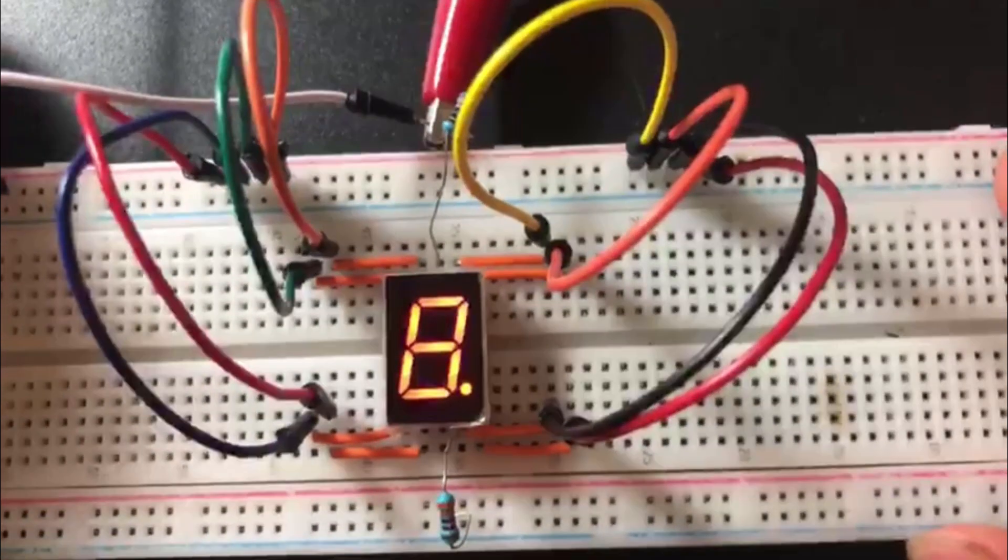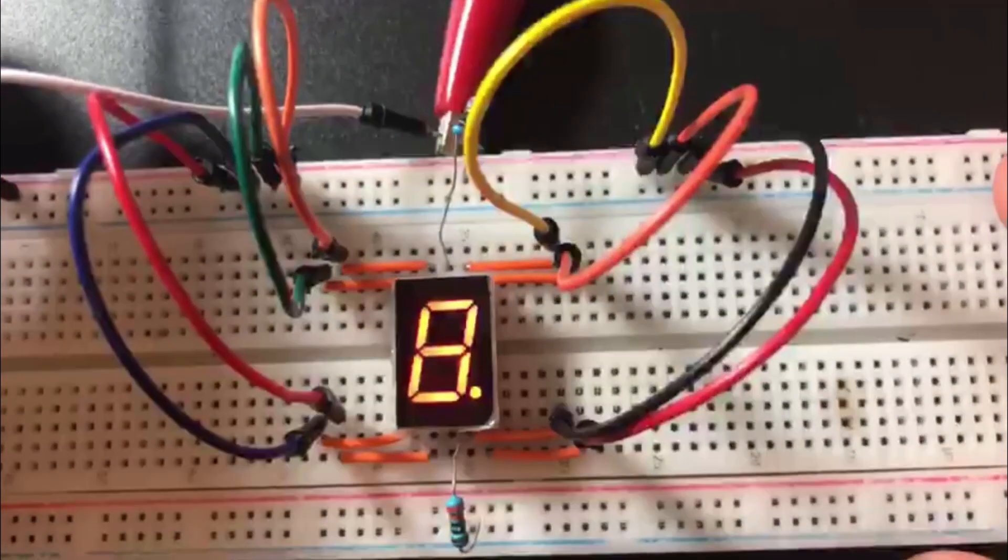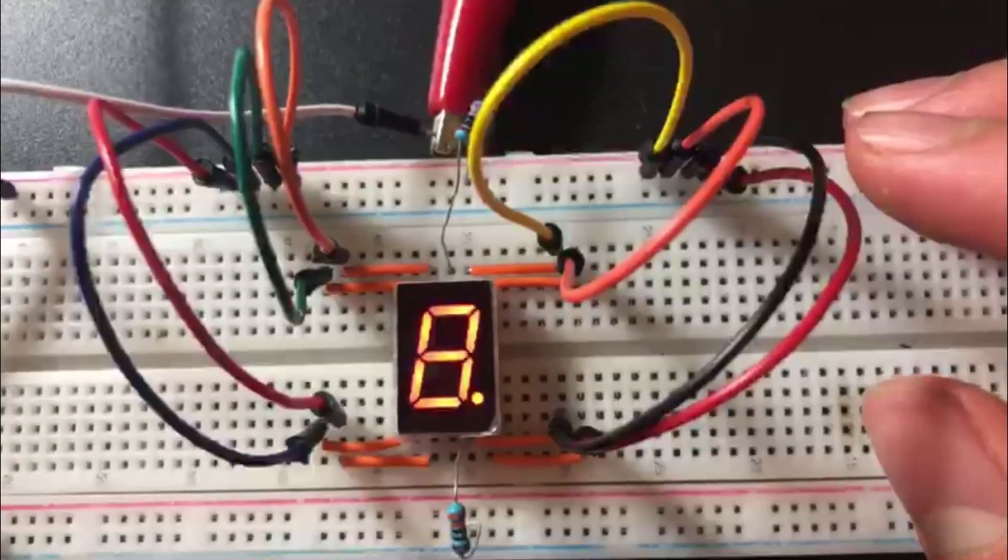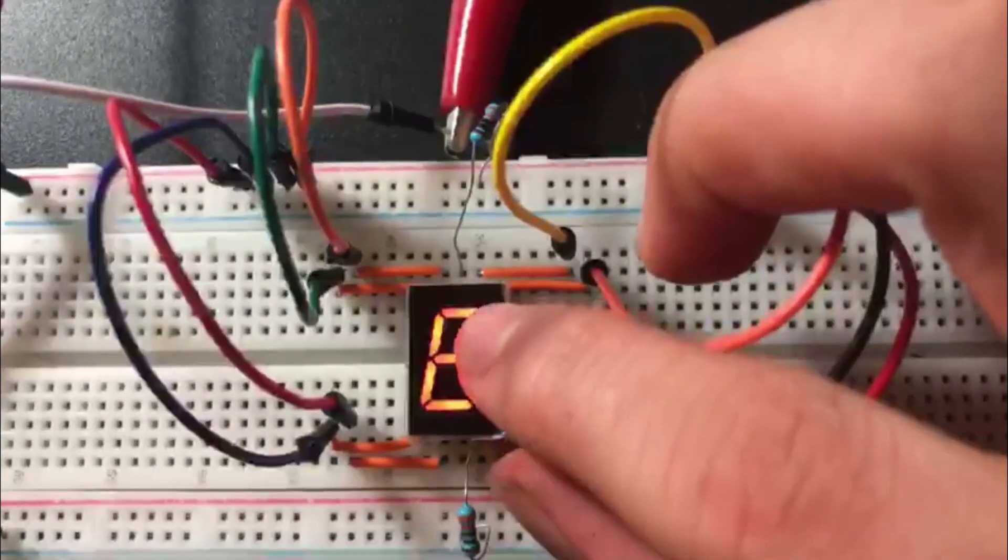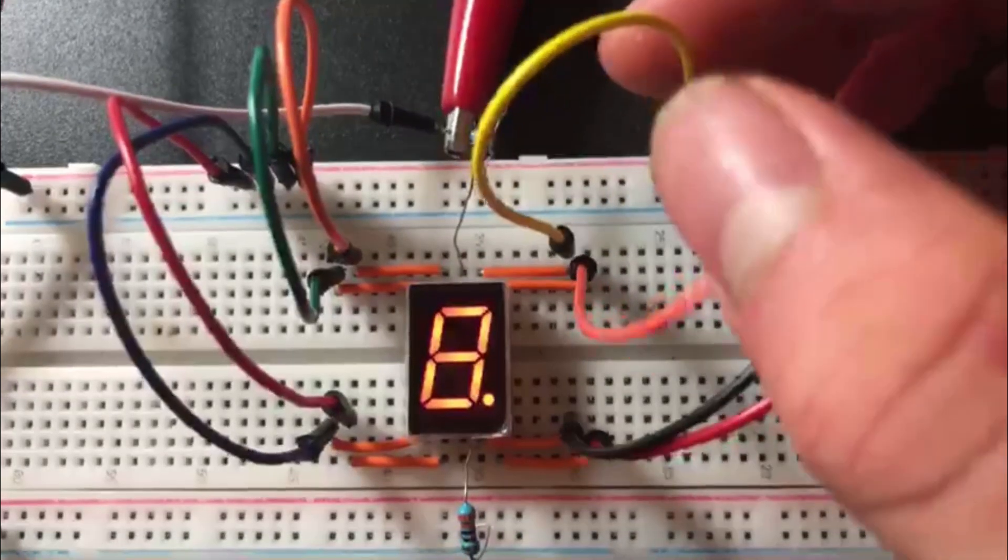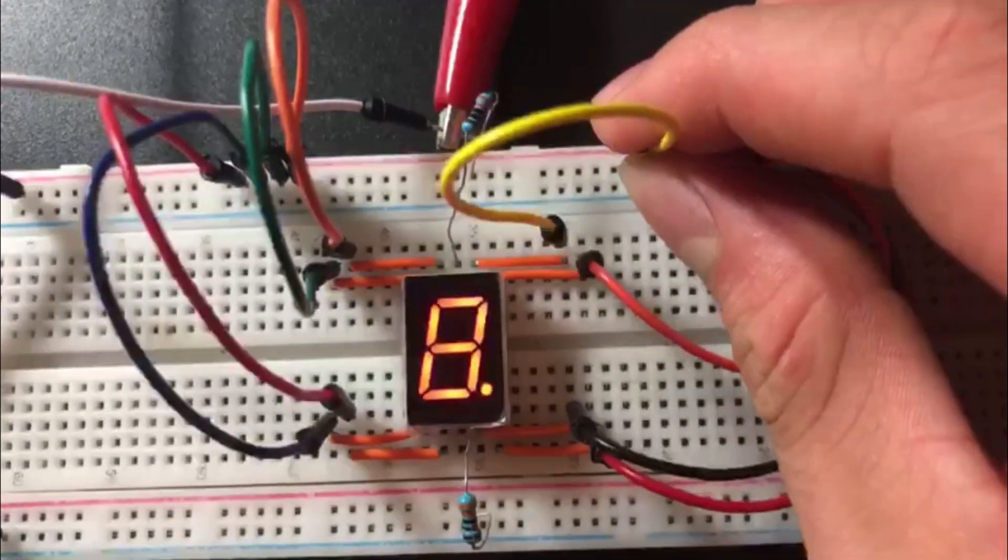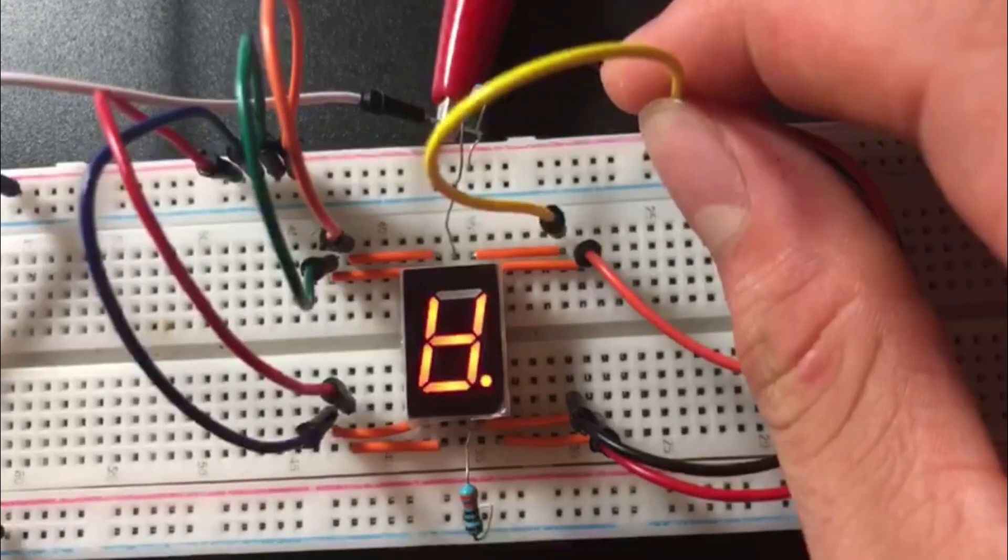I finally have my seven segment display powered. And so if I want to turn off a specific segment, I'm able to do so if I disconnect. So for example, if I want to get rid of segment A, I'm going to get rid of this wire from ground in order to power it off. And so now it's off.